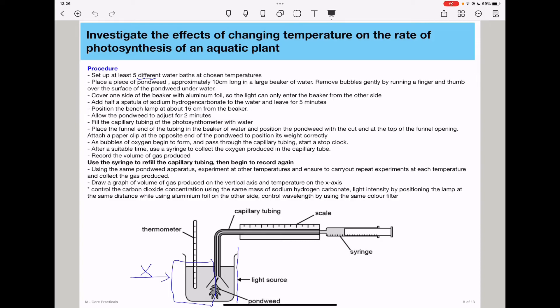Use a syringe to refill the capillary tubing and then begin to record again. Using the same pondweed apparatus, experiment at other temperatures and ensure to carry out repeat experiments at each temperature and collect the gas produced. Draw a graph of volume of gas produced on the vertical axis and temperature on the x-axis.